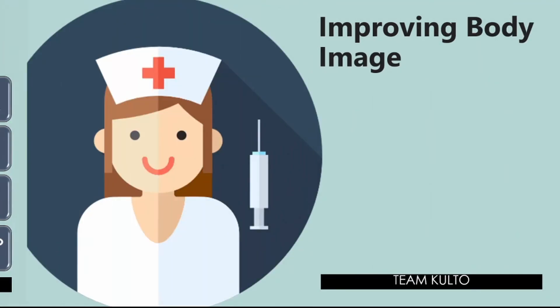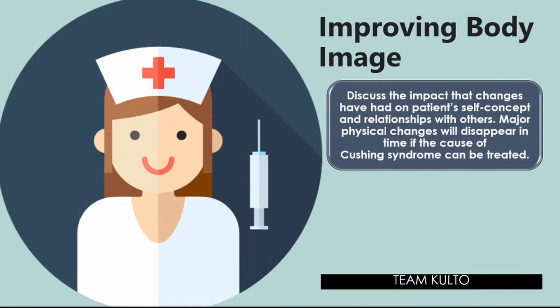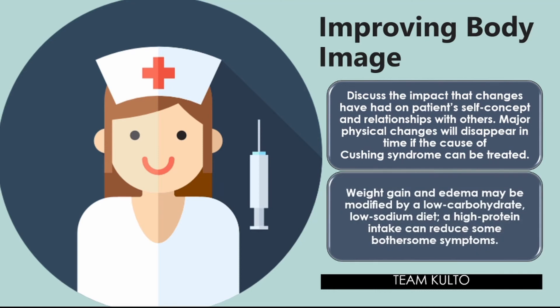For improving body image: discuss the impact that physical changes have had on the patient's self-concept and relationships with others. Major physical changes — such as moon face, buffalo hump, and truncal obesity — will disappear in time if the cause of Cushing's syndrome can be treated. Weight gain and edema may be modified by a low-carbohydrate, low-sodium, and high-protein diet, which can reduce some bothersome symptoms.